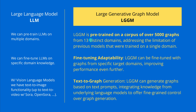This particular research I'm going to show you - the system for the graphs was pre-trained on a corpus of 5000 graphs from 13 distinct domains. And we have now finally, after text-to-image, text-to-video, now we have text-to-graph generation.